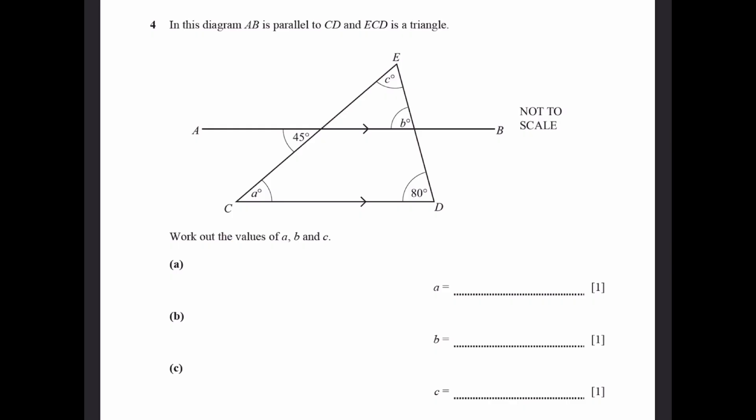Question 4. In this diagram, AB is parallel to CD, and ECD is a triangle. Work out the values of A, B, and C. The value of A is just the same as this angle here, because of alternate angles. It's kind of Z-shaped. So it'll just be 45 degrees.